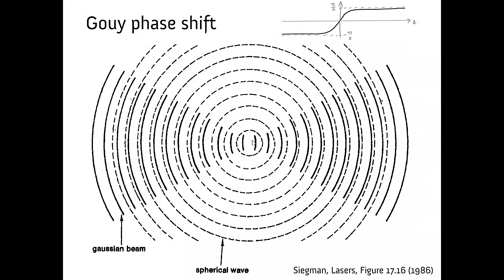There's a visual way you can view this Gouy phase shift and it's to draw the wave fronts of a spherical wave and the wave fronts of a Gaussian beam. Here's the result. You can see that if the beam's going this way, then at large negative Z, the Gaussian wave fronts are pi on 2 out of phase with the spherical ones. After focus, if you counted all these lines, you'd see that they led the spherical wave by pi on 2.